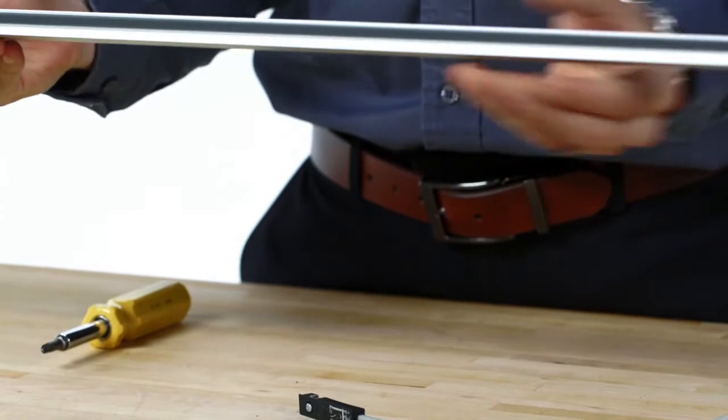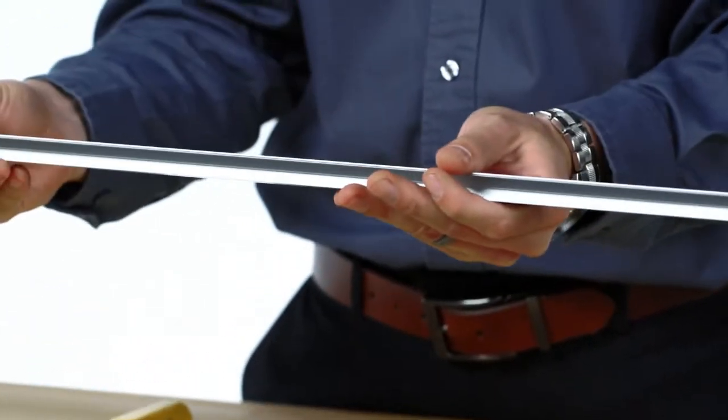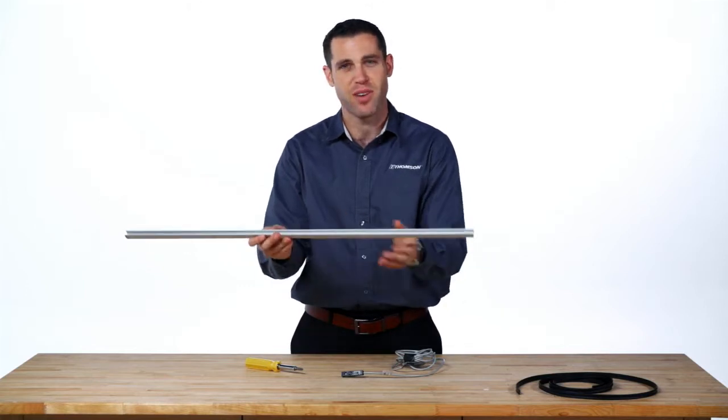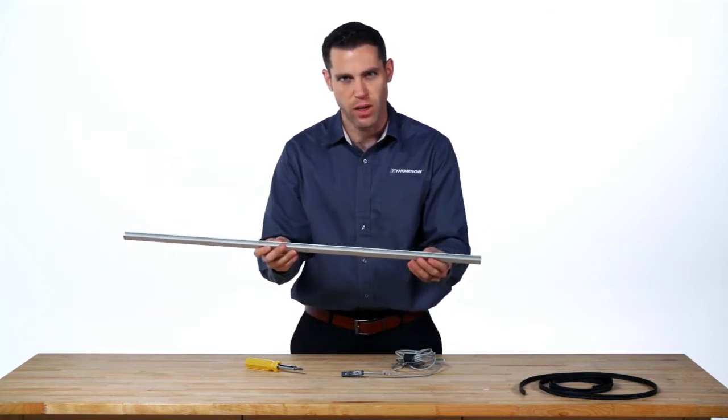If you have a linear unit that is under a meter length, then we will send this track to match the stroke length of the unit. If the linear unit is over a meter long length, we will cut this into 500 millimeter sections that can be installed anywhere along the linear unit.